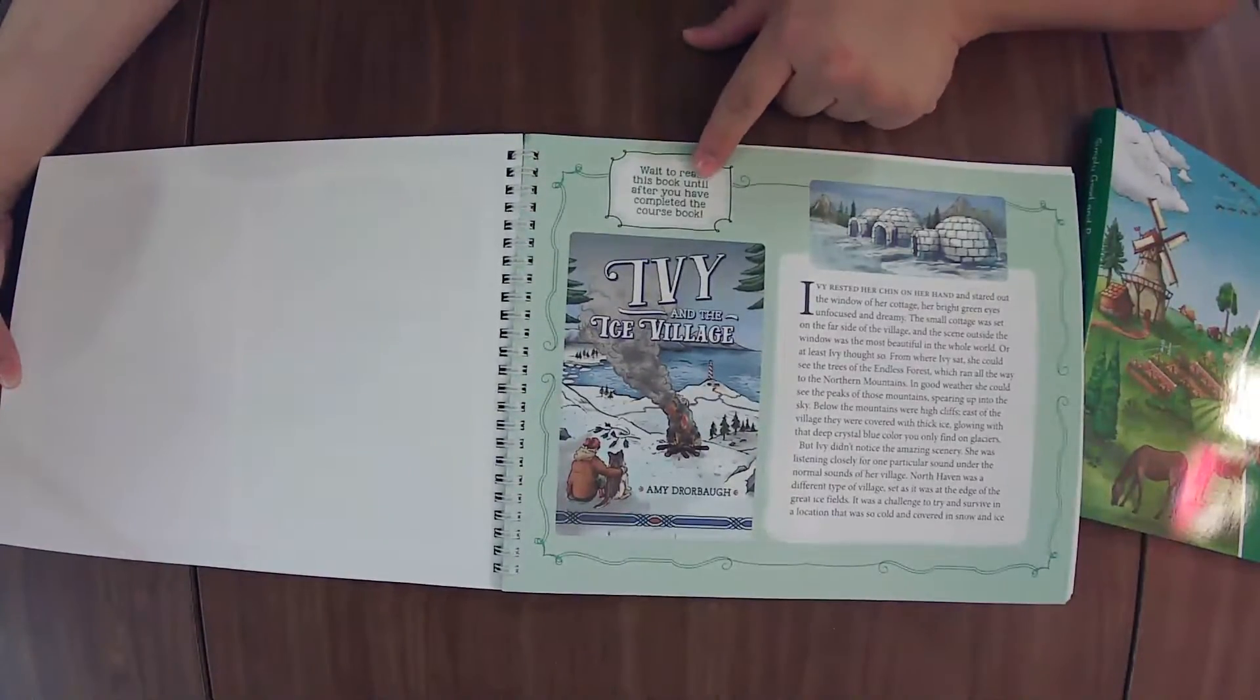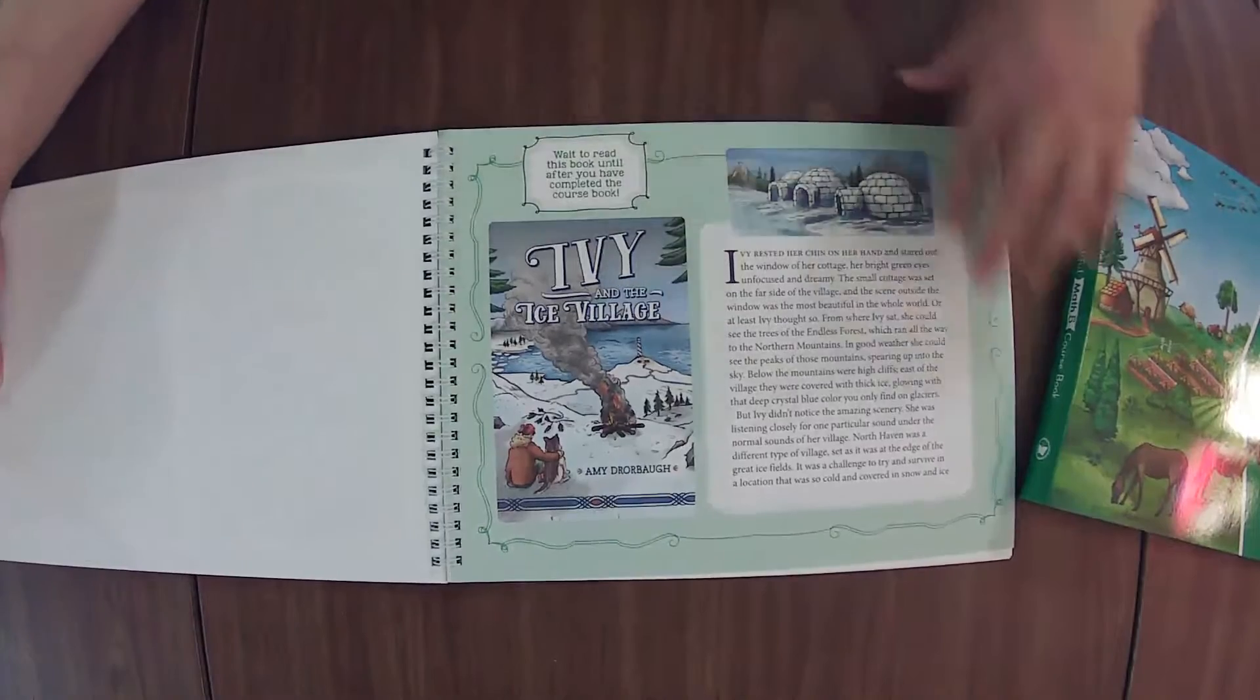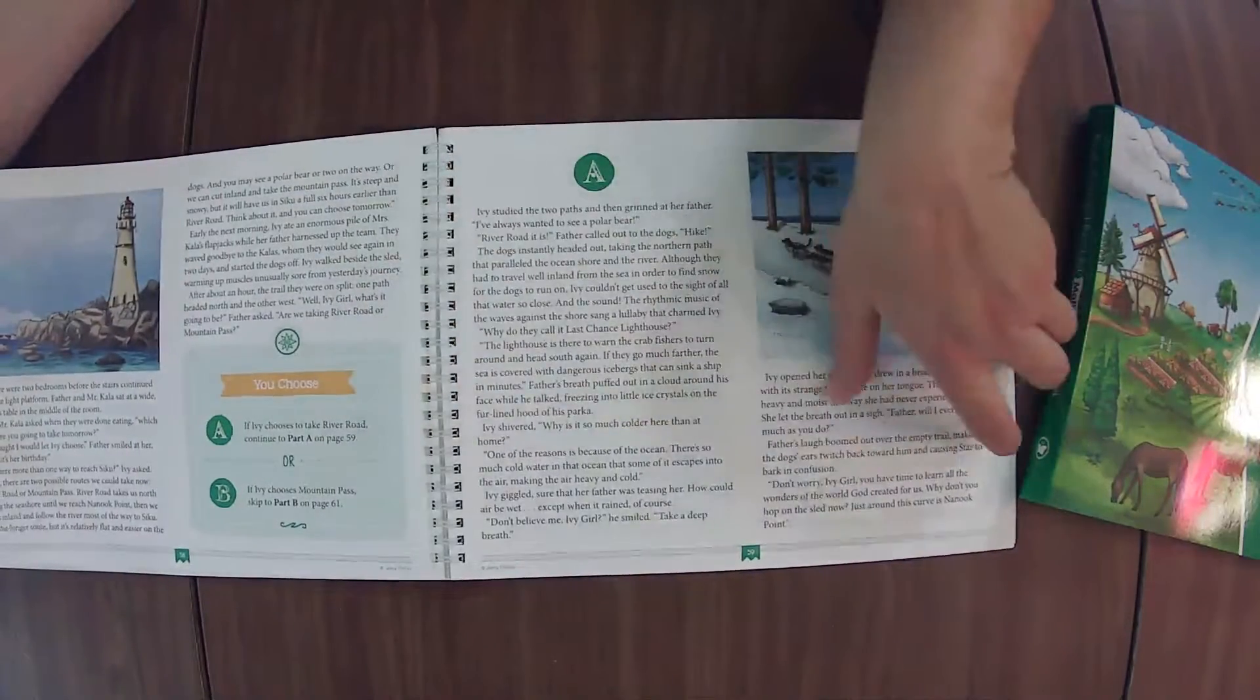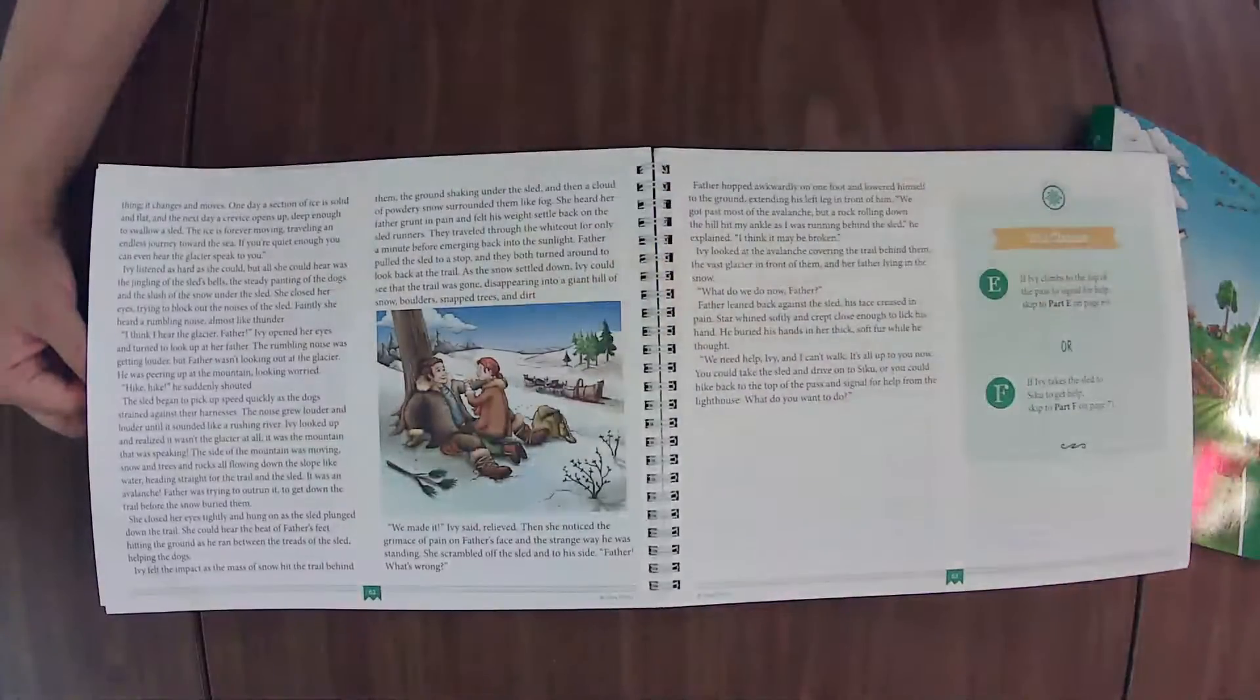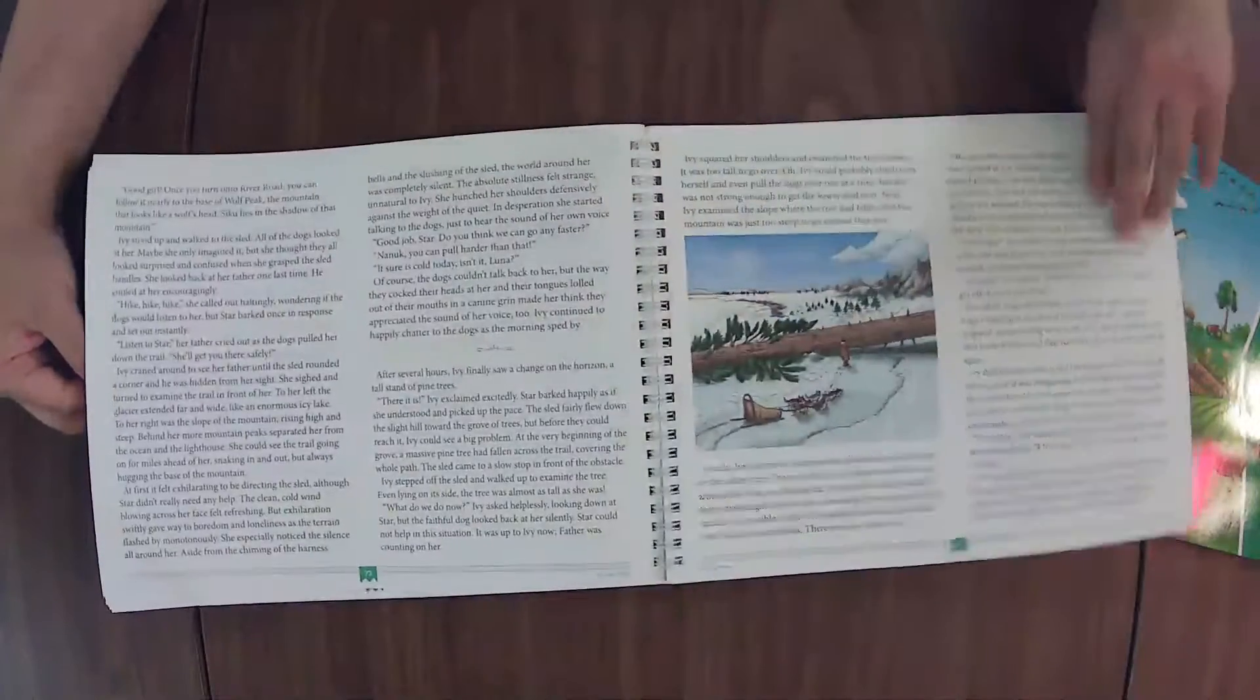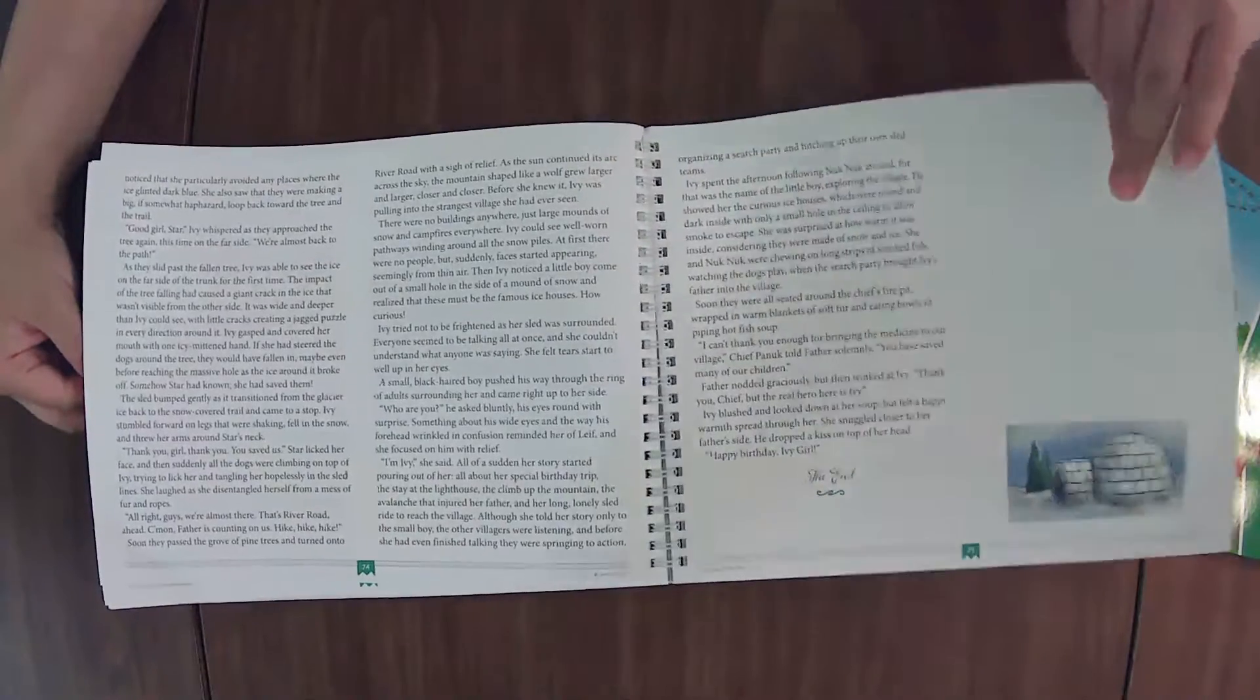And then when they get to the end, in Level 4 I believe it's a choose your own adventure story. Wait to read this book until after you've completed the course. So you have Ivy and the Ice Village. Here you choose, so it is a choose your own adventure, you choose where they are going. We have not made it this far yet so I'm not sure how my kiddo likes the Level 4 version but kiddos typically like their choose your own adventure and this kiddo does like choose your own adventure. So we have other choose your own adventure books that they enjoy so I have no doubt that it will be enjoyed.